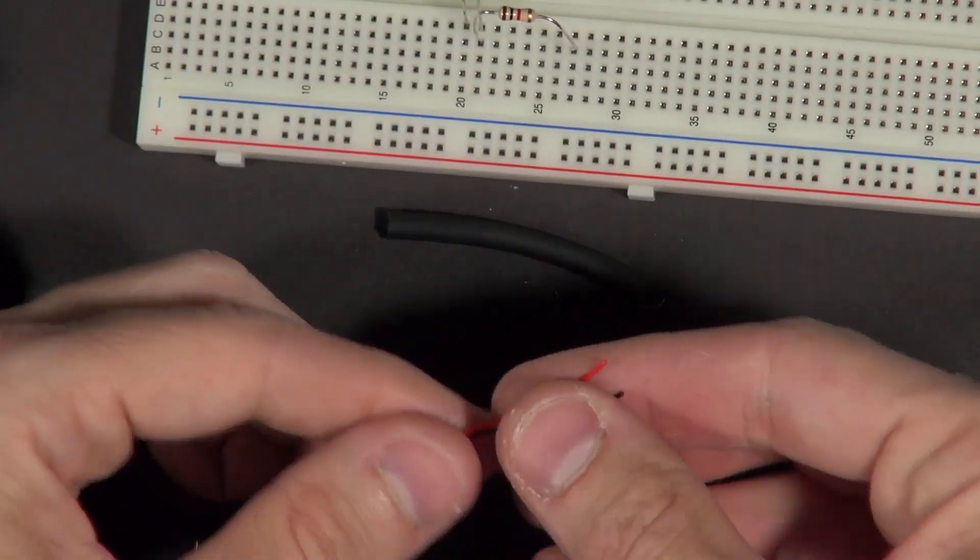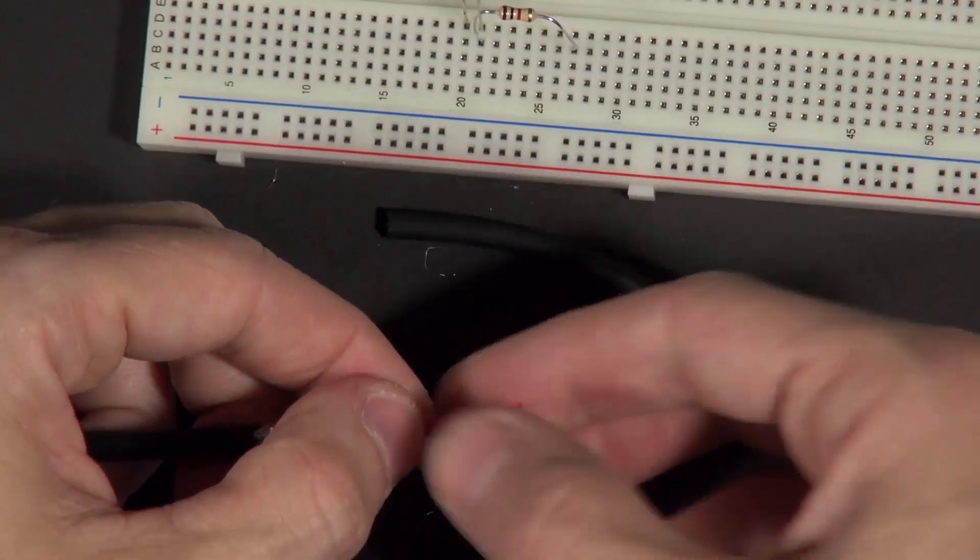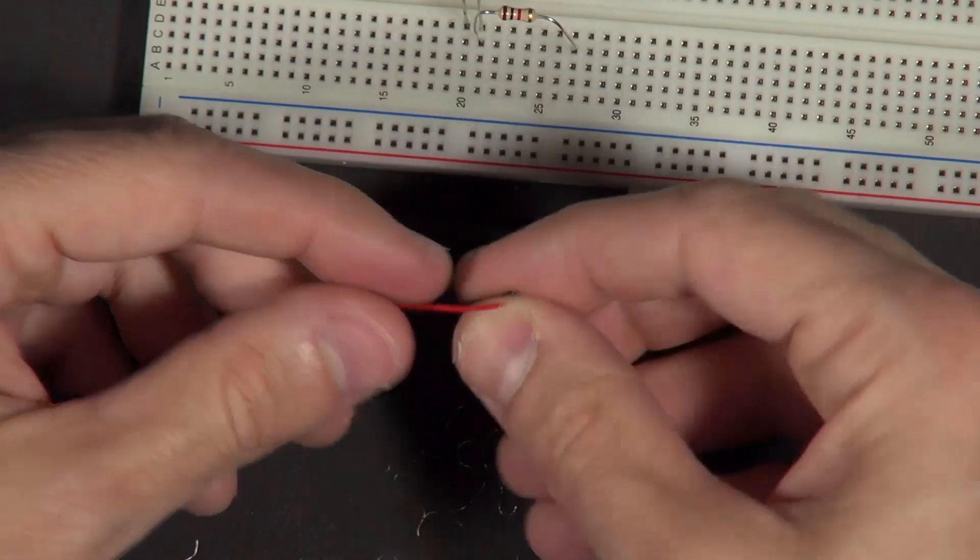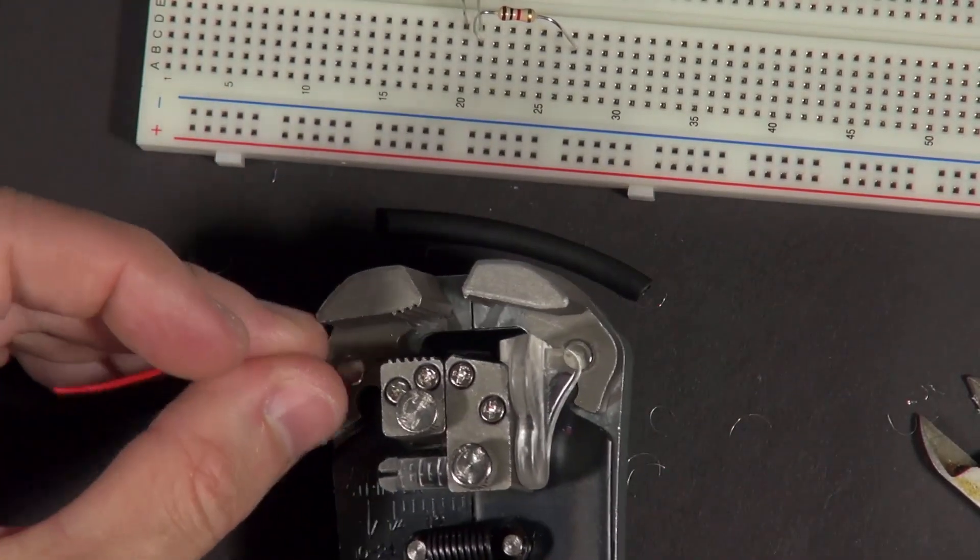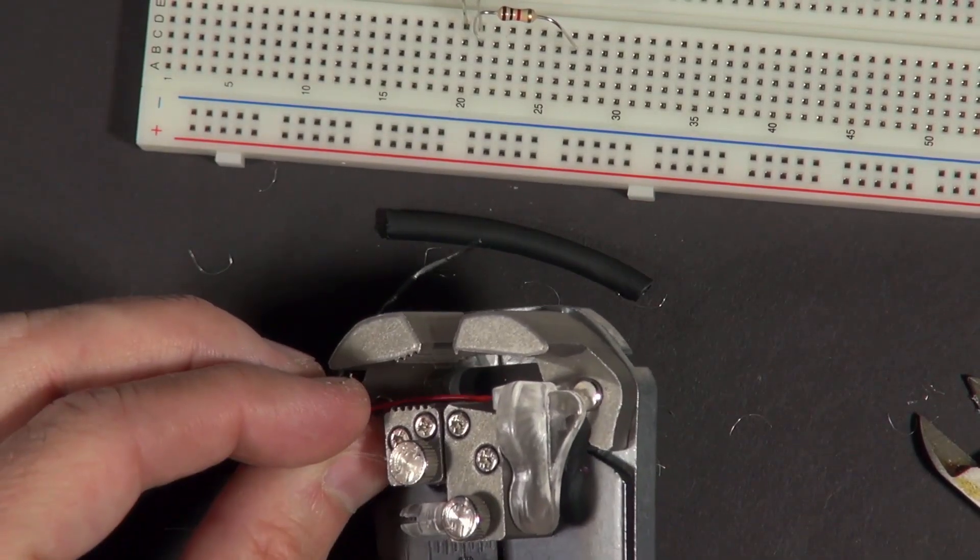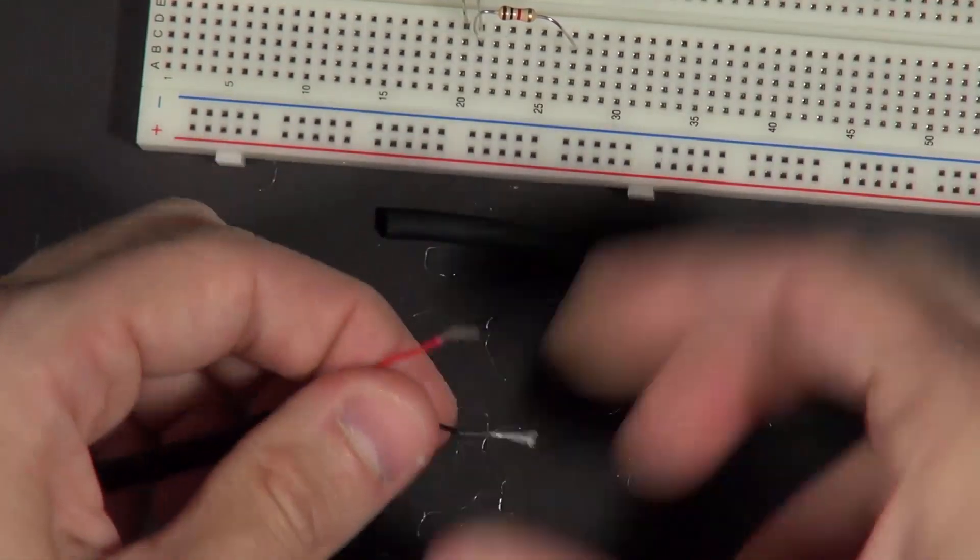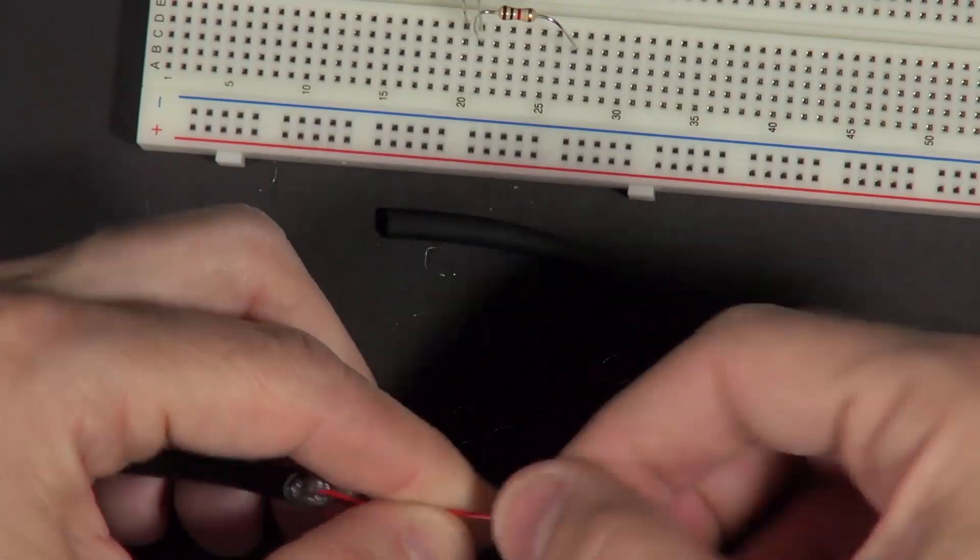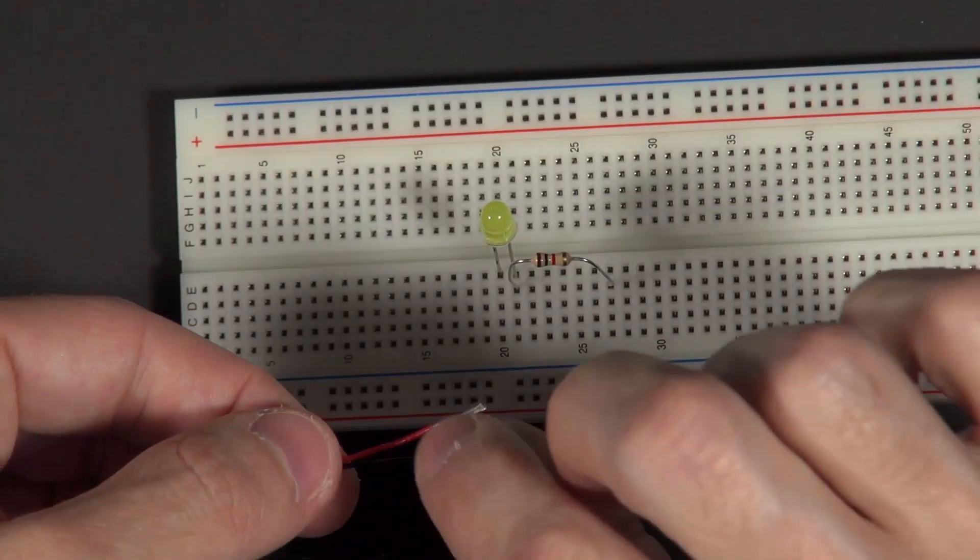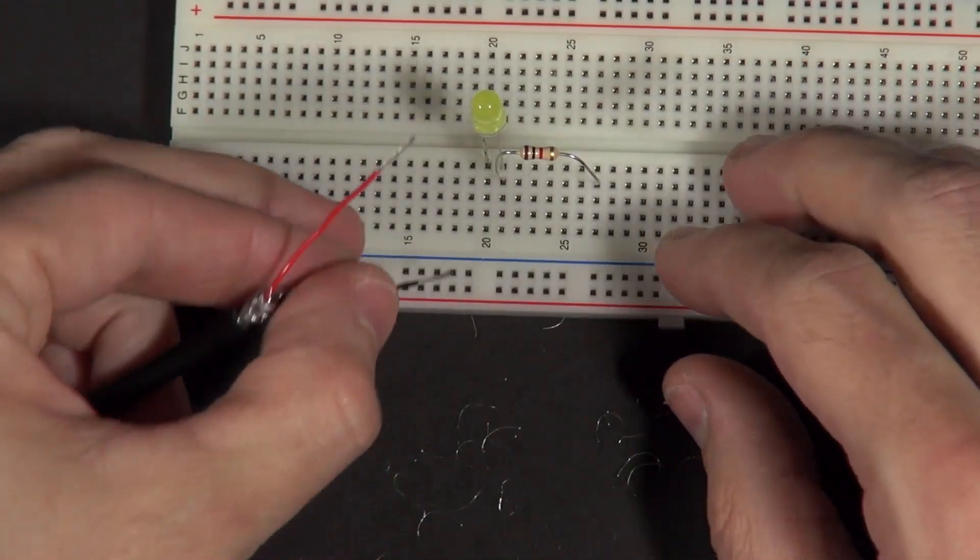So I'm left with the red and the black. I could clean this up a little bit more. Now what I want to do is strip the insulation off of these. I'll use a little wire stripper here. Strip the insulation off of the black, strip the insulation off of the red. Here I have the red and the black, which should give me five volts. What I'll do is go ahead and connect these into the breadboard.